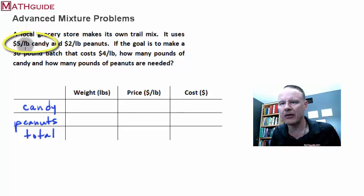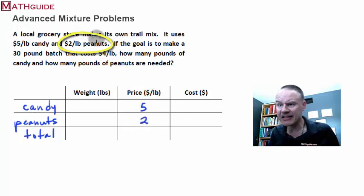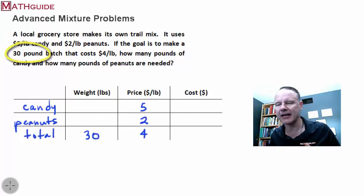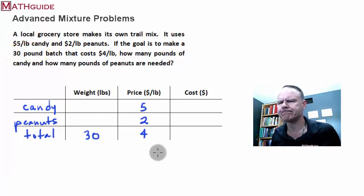All right, so we've got $5 per pound candy. So I'm going to put that in the price. It's $5 per pound candy, and there's $2 per pound peanuts. That takes care of those two pieces of information. The goal is to make a 30 pound batch that costs $4 per pound. Now we're talking about the total. So I want that total to be $4 per pound and 30 pounds of it. And there you go, there's the weight. The total weight is going to be 30 pounds when we're done mixing it. All right, so far so good.